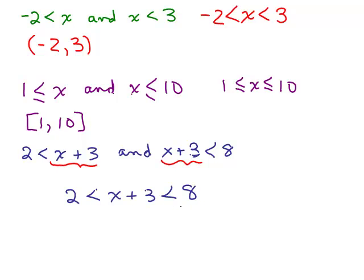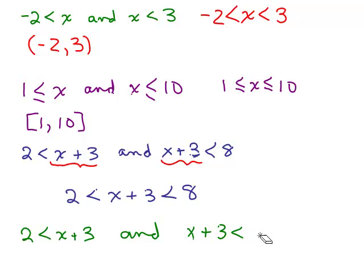You can also go back and forth. If something is written as 2 is less than x plus 3 is less than 8, you can read that as: 2 is less than x plus 3 and at the same time x plus 3 is less than 8 — which is of course what we started with. So these are equivalent to each other.